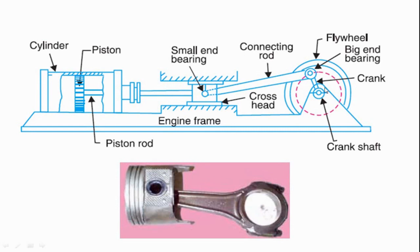In actual practice, there are many components used in mechanisms. Taking the example of an engine, consider the connecting rod. One end of the connecting rod is connected to the crank and the other end is connected to the piston. The end connected to the crank has circular motion, while the end connected to the piston has reciprocating linear or translation motion.